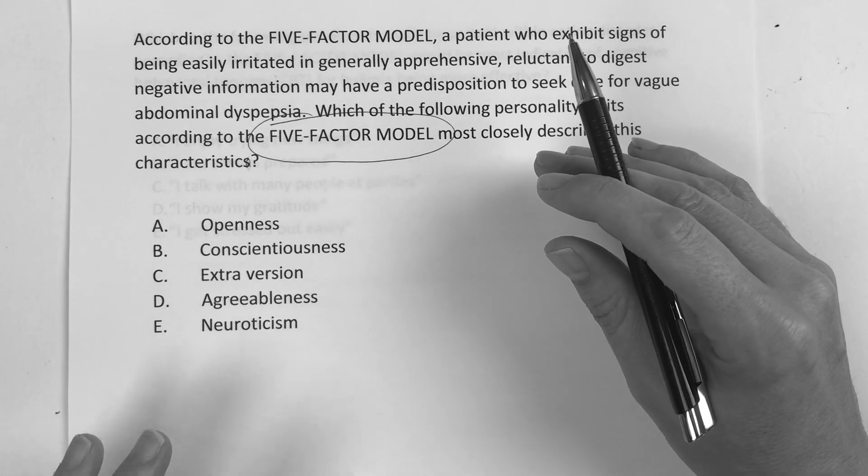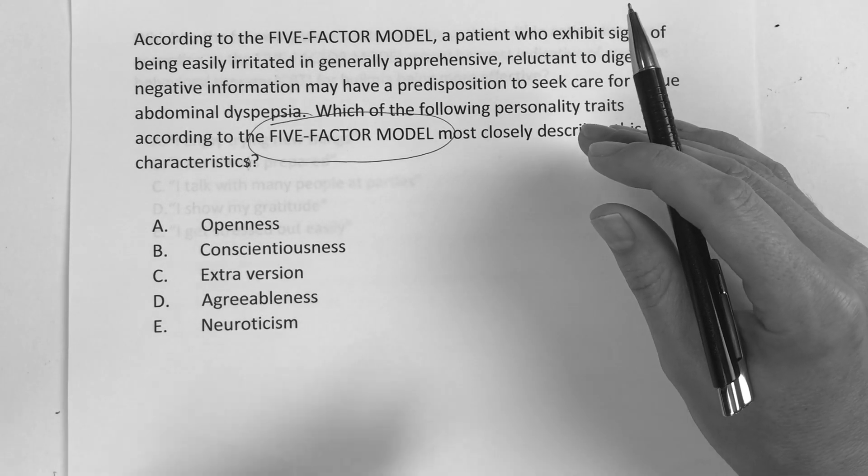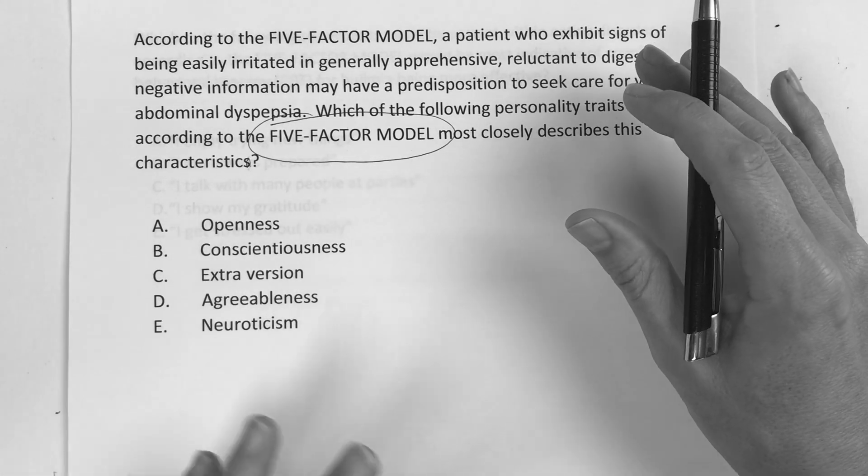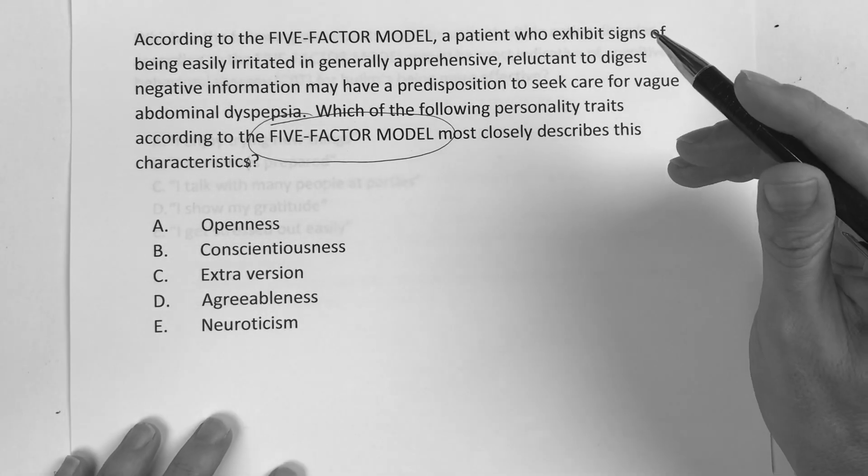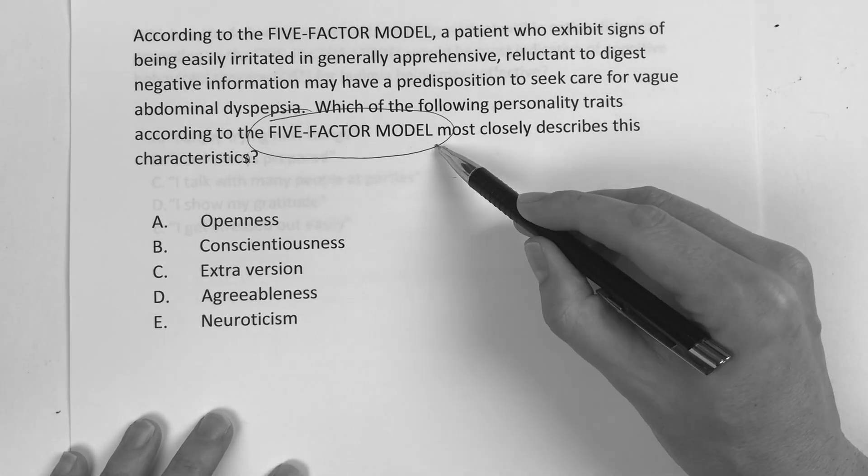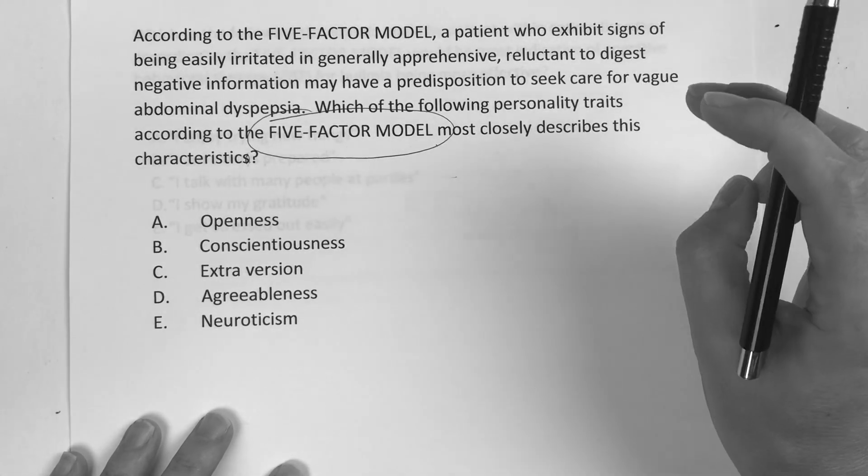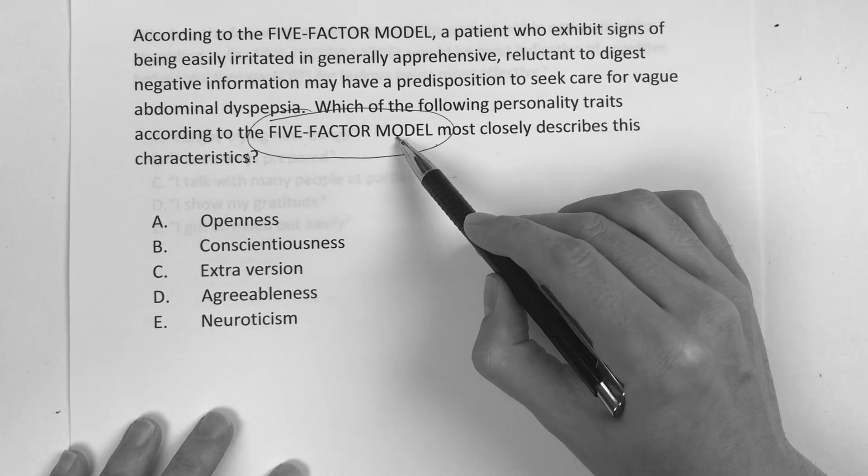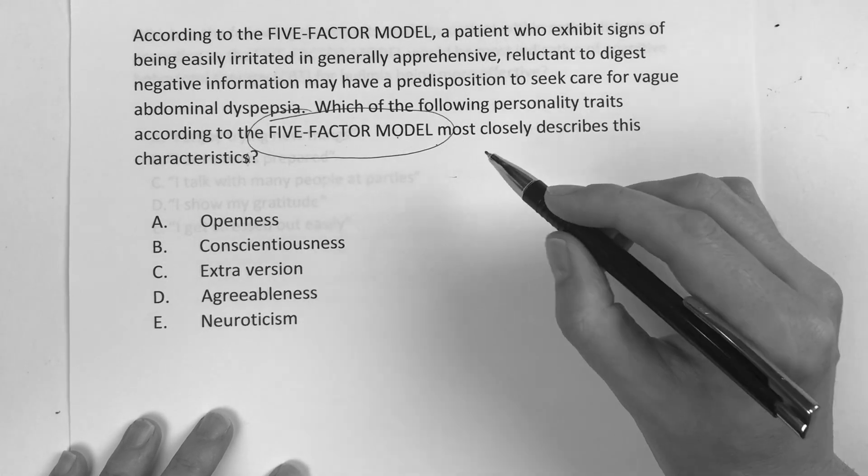And if you as a clinician can understand those five and just be aware of them, you can understand better whether someone's going to follow through with preventative care, if they're going to be compliant with medications, and just have pretty much a better clinical outcome altogether. So we have to be at least familiar for the step exams on this five-factor model because this is what the research actually says.